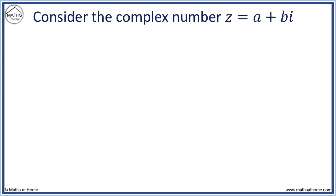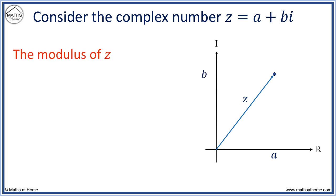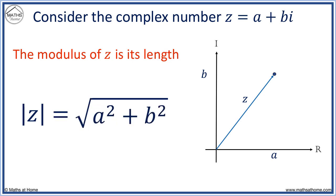We consider a general complex number z equals a plus bi. On the complex axis it is here, with real component a and complex component b. Now the modulus of z means its length. The modulus is written like so, and it is equal to the square root of a squared plus b squared. This is the length of the line z as calculated using Pythagoras' theorem.